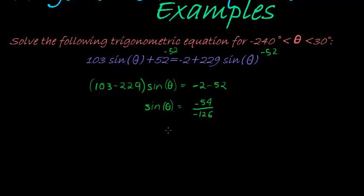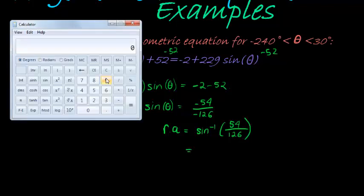What is important is that in order to find the reference angle, not theta, theta is a bit more complicated than that, the reference angle, what I need to do is take the inverse function, the arcsine of that thing. Now, I can get rid of the negatives. That's fine, since negative divided by negative would be positive. And then I find that my reference angle is 54 over 126.